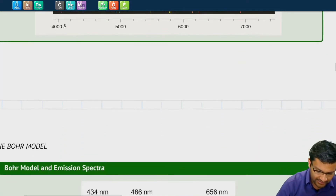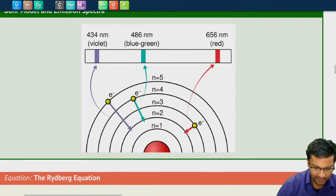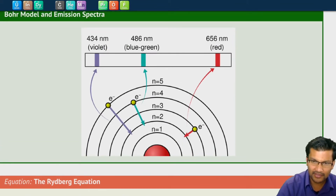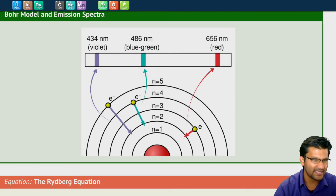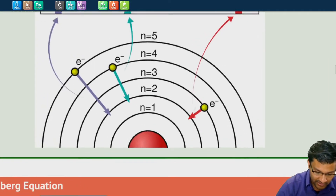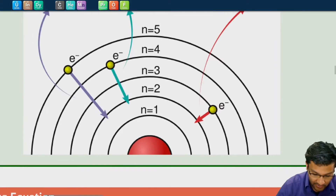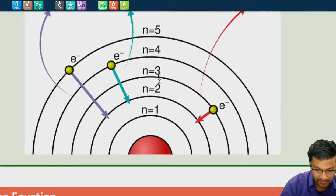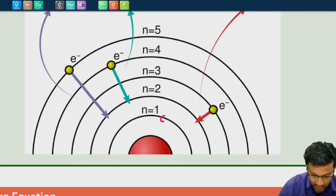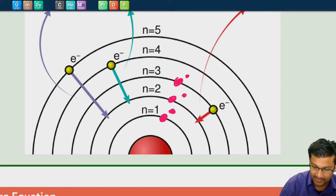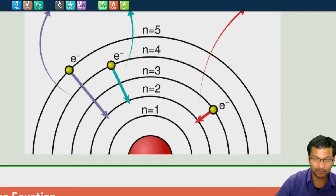Well, Bohr decided that yes, the electron goes around the nucleus, but maybe it can't take up any and all positions around the nucleus. Rather, it can only circle around very specific orbits, and it can't really change anywhere in between those orbits. He labeled these orbits n equals 1, 2, 3, 4, 5, and so on, and electrons could only be in n=1, or n=2, or n=3, but not somewhere in between. This was his idea to explain those specific lines.